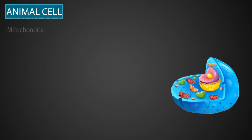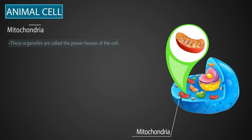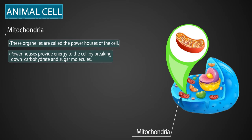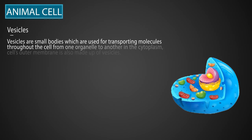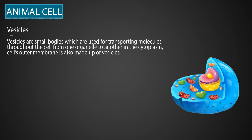Next is the mitochondria. These organelles are called the powerhouses of the cell. They provide energy to the cell by breaking down carbohydrates and sugar molecules. Next are vesicles — small bodies which are used for transporting molecules throughout the cell, from one organelle to another in the cytoplasm. The cell's outer membrane is also made up of vesicles.